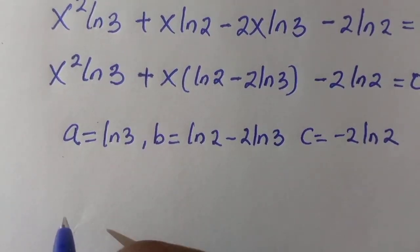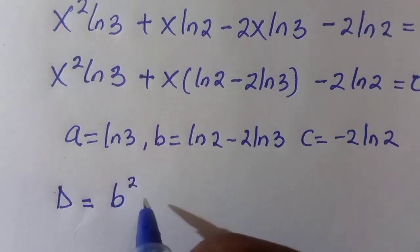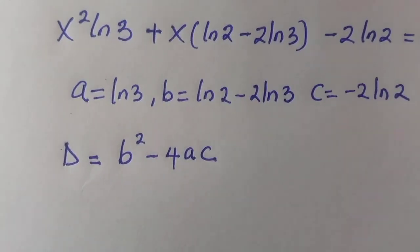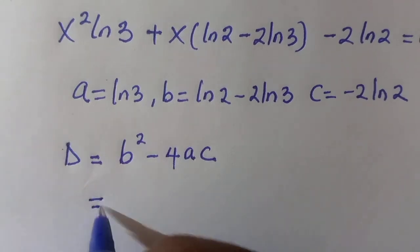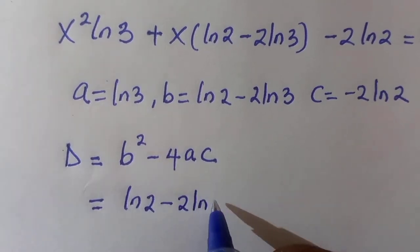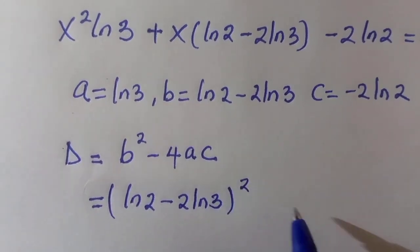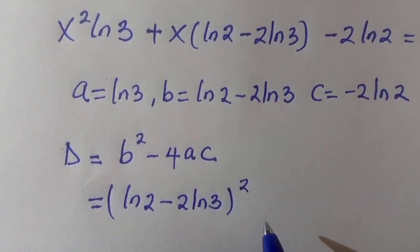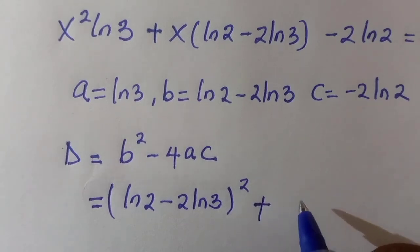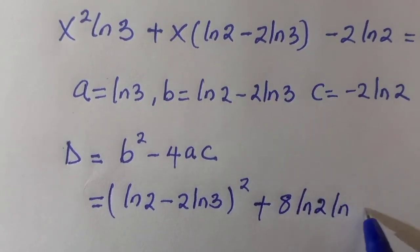We compute the discriminant, which is b squared minus 4ac. We substitute the values of a, b, and c. As b is (ln 2 minus 2 ln 3), we square that, then minus — but since c is negative, the minus and minus make a plus — giving us plus 8 ln 2 ln 3.